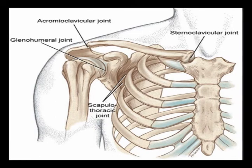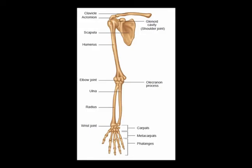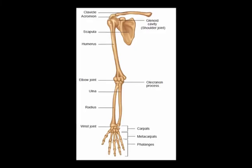In summary, the appendicular skeleton of the upper body consists of 14 phalanges in each extremity, five metacarpals in each extremity, eight carpal bones in each extremity, two forearm bones — the radius and the ulna — the humerus, and the shoulder girdle, which is the scapula and the clavicle.